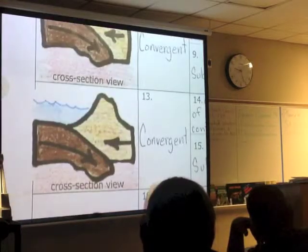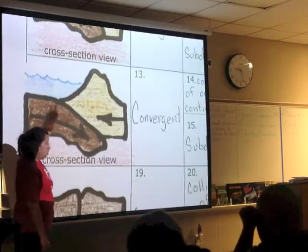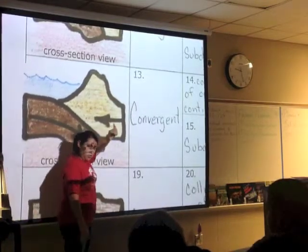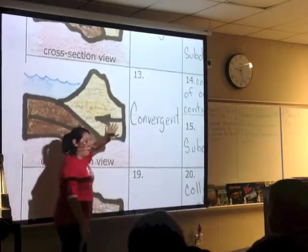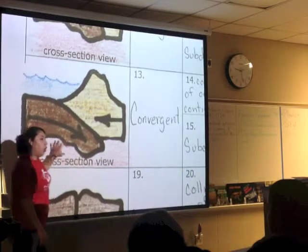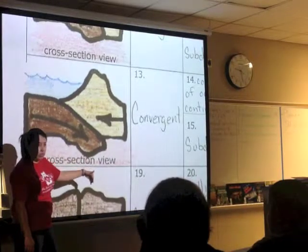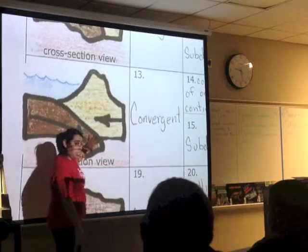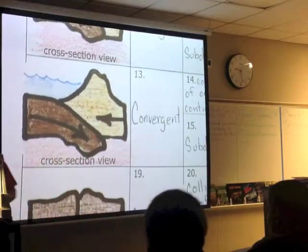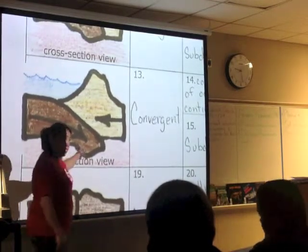Moving on to the next convergent boundary. Still convergent — they're still colliding — but now I have one plate under the water and one that is not. This is an oceanic-continental convergent boundary, because one plate is under the ocean and one is a continent. Oceanic plates are always more dense than continental plates, so all oceanic plates subduct. The magma causes destruction as it melts the subducting plate. Magma comes up, erupts, and you get volcanoes and mountains. The Andes Mountains, which are on the coast of South America, are made because of this.